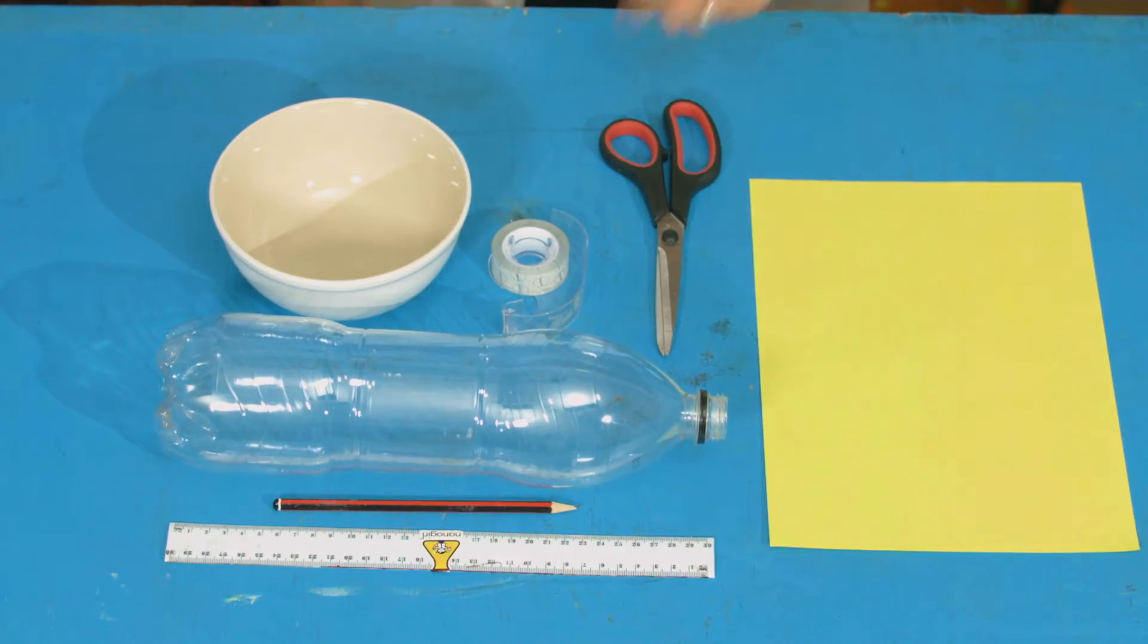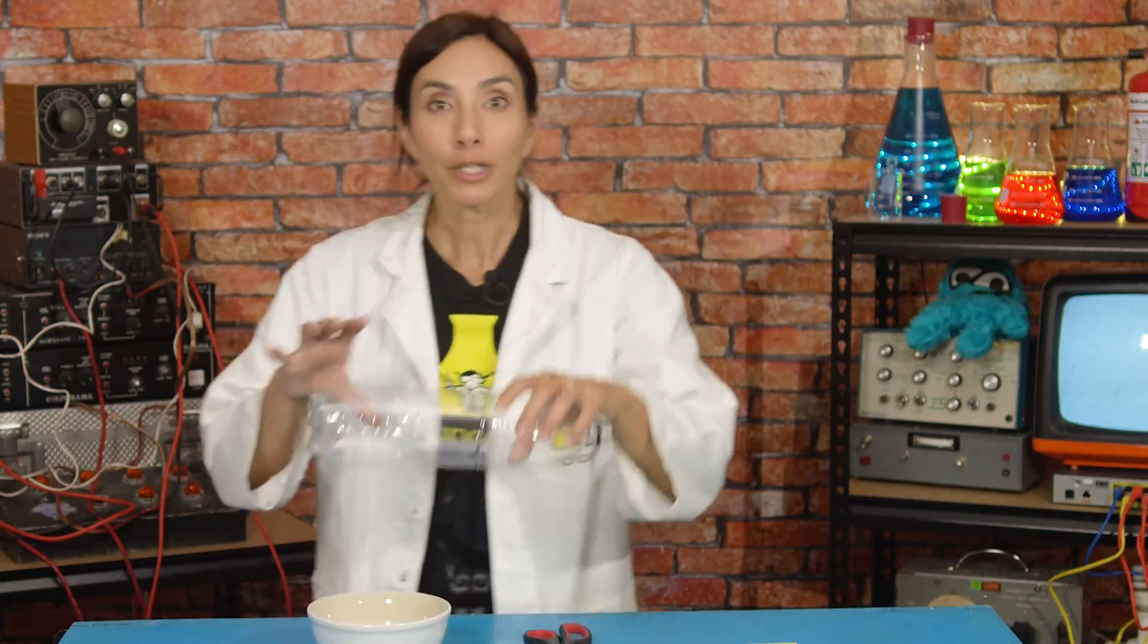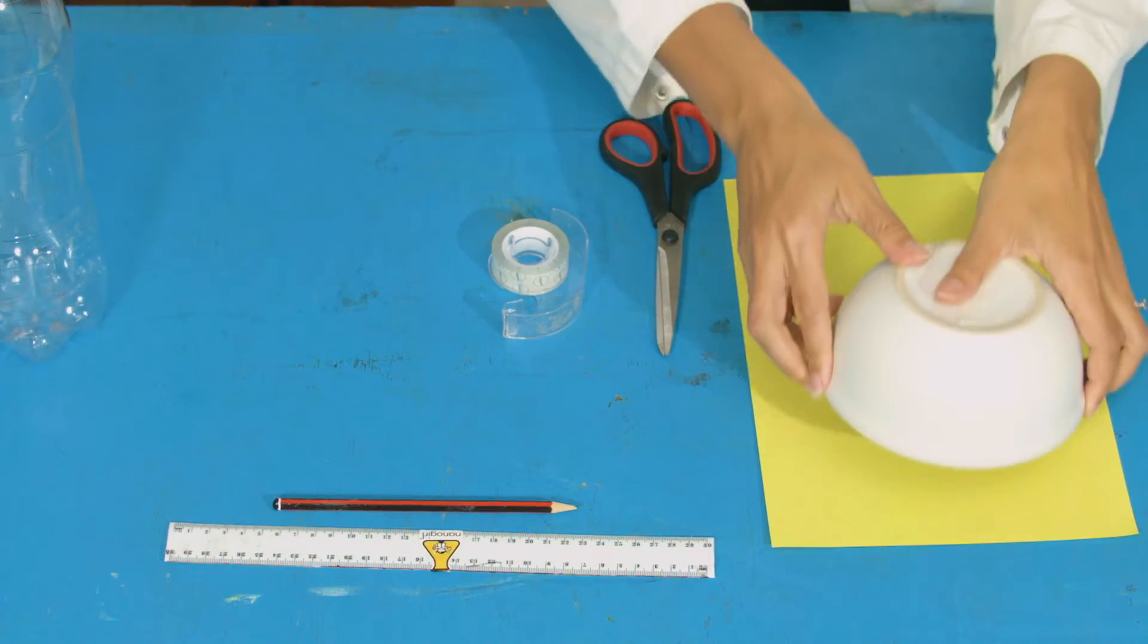You're going to take your bottle and make sure you take the top off. You're not going to need that. Then take your paper and draw, using the bowl, a circle around it.